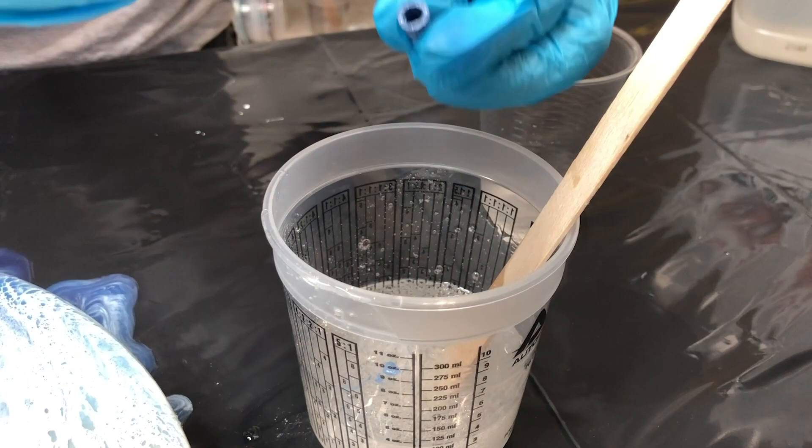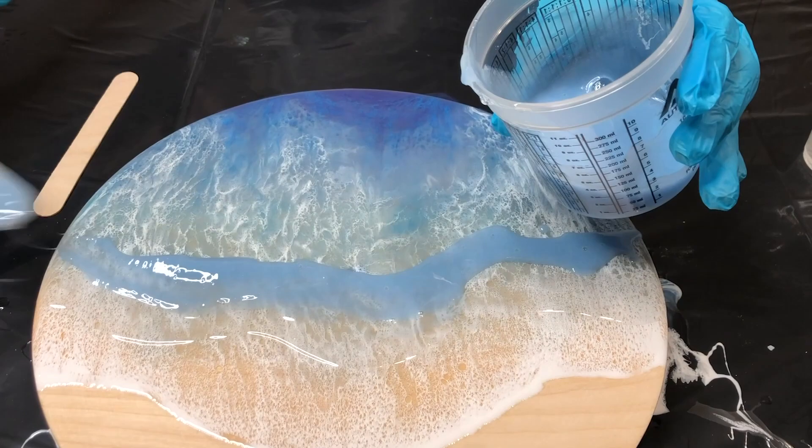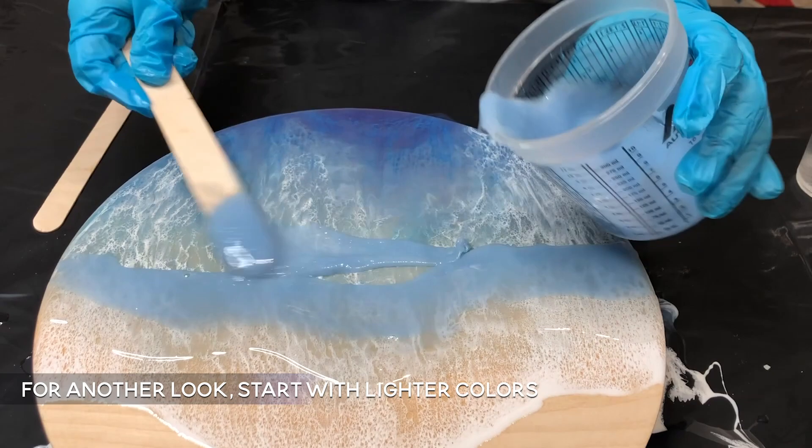For my second wave, I'm actually going to show you a different way to apply your color. I place my clear line first, and then I reserve a little bit of that clear in a cup for my white pigment later. Then I'm going to add my lightest color first.